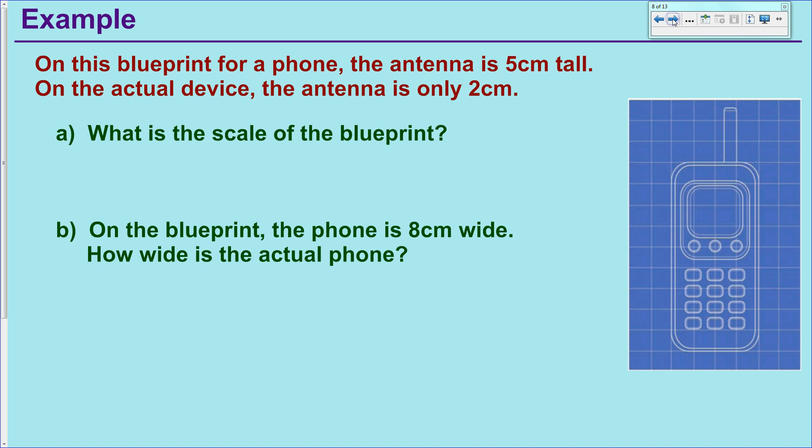So let's do an example. This is straight out of our book. There's a blueprint of a phone off to the right, and it is larger than the actual size of the phone. So on the blueprint, the antenna is 5 centimeters tall. On the actual device, the antenna is only 2 centimeters. So the question is, what is the scale of the blueprint? And we're going to do a nice simplified one. So to do this, all you have to do is write a fraction of the two numbers that are given to you. And you can put either one up on top or another one on the bottom. It really doesn't matter. I chose to put the big number on top. So I did 5 centimeters to 2 centimeters.